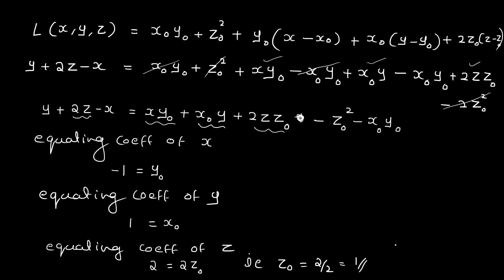Therefore, the point P = (x0, y0, z0). We have found x0, y0, and z0. The point P is the solution to the problem.